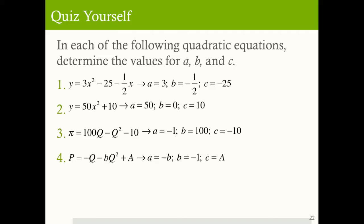And then finally, this quadratic inverse demand function: the a value is negative b, the b value is negative 1, and the c value is equal to a. So it's really important that you can identify the a values, the b values, and the c values. This is for graphing and for solving quadratic equations and quadratic equilibria.